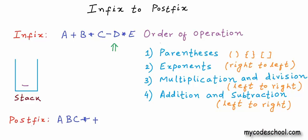D is an operand, so it will simply go. Next we have multiplication — there is nothing in the stack having higher precedence, so we pop nothing and push multiplication. Next we have an operand; it will simply go. There are two ways to find the end of the right operand for an operator: first, if we get an operator of lesser precedence; second, if we reach the end of the expression. Now that we have reached the end of the expression, we simply pop and place these operators — first multiplication, then subtraction.